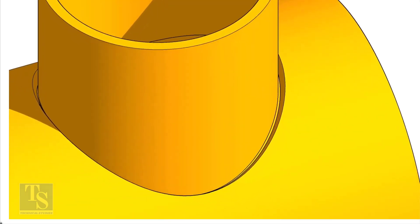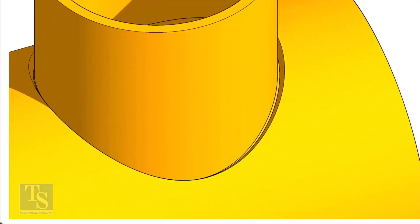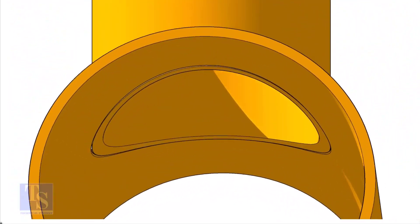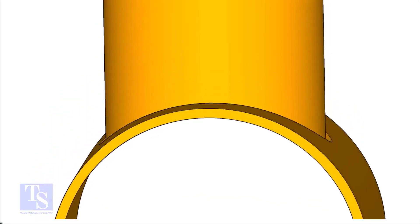On the branch pipe, there is no bevel preparation, but the cut-back cut is done. The end of the branch is level with the inside diameter of the header pipe.